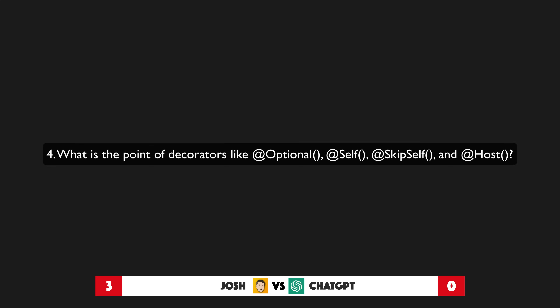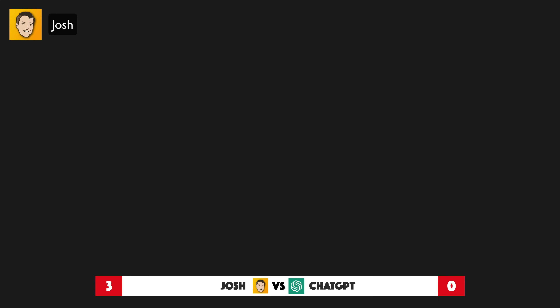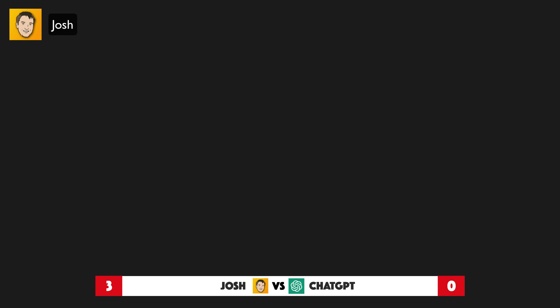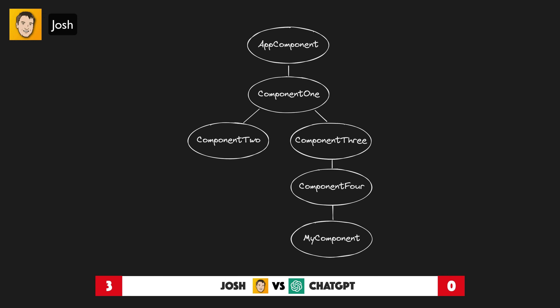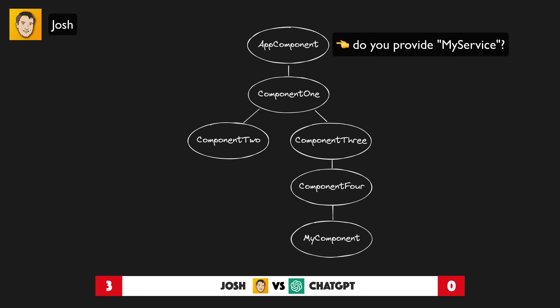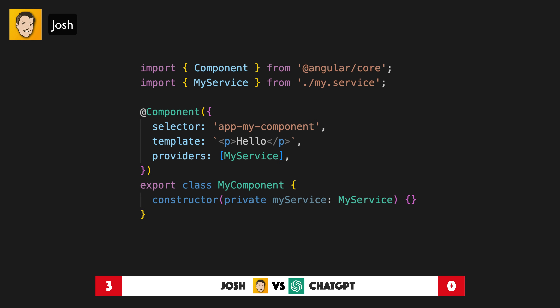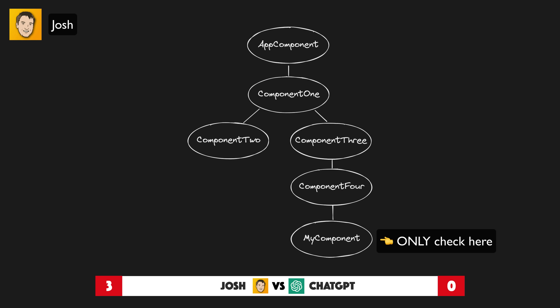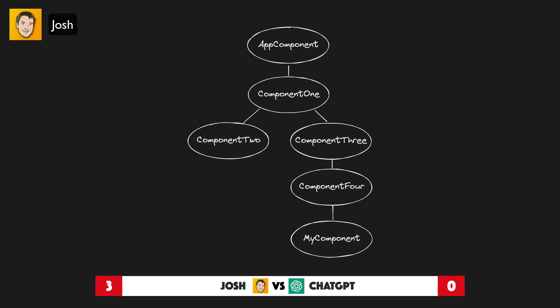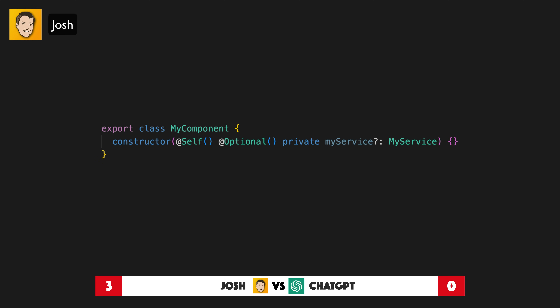Now for the final question: What is the point of decorators like optional, self, skip self, and host? These are called resolution modifiers — at least for most basic scenarios they are not often used. They give us more control over how hierarchical dependency injection works. If a component is trying to inject a dependency and it's not defined locally, it will climb the injector tree until it finds a provider. But if we don't want that to happen — if we only want the provider supplied directly to the component itself — we can use the self resolution modifier, which will cause an error unless the component supplies its own provider. If we don't want the app to error when a token can't be resolved, we can use the optional resolution modifier, so it will be null rather than causing an error.